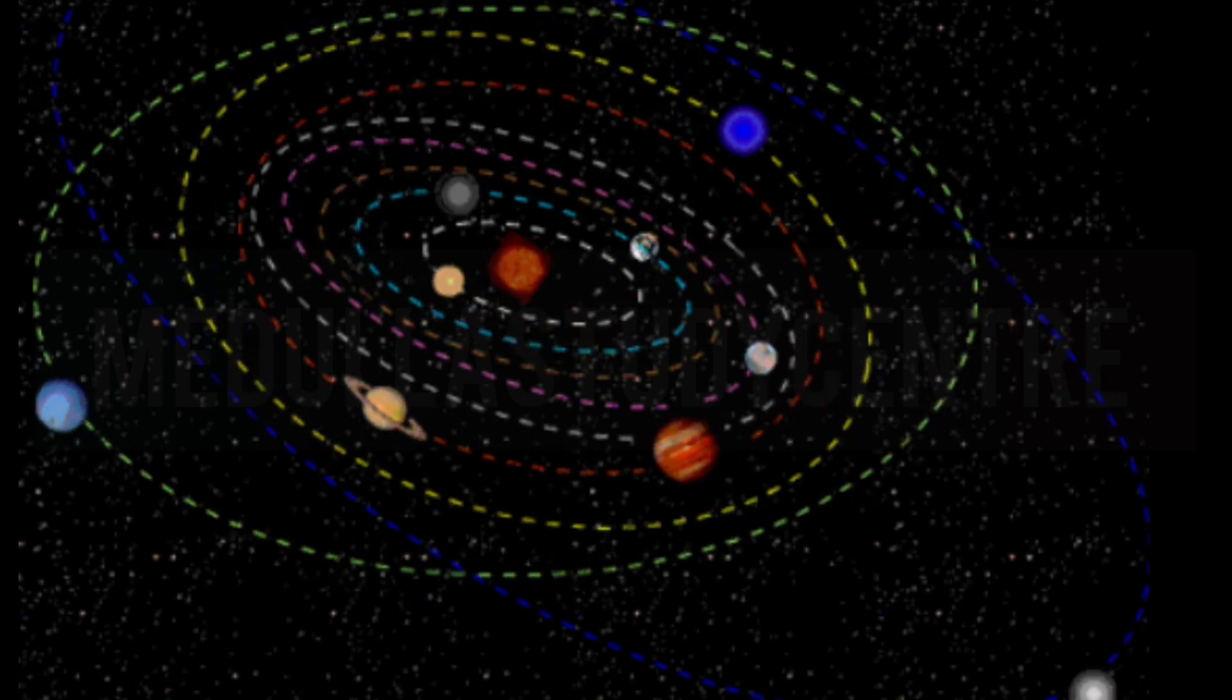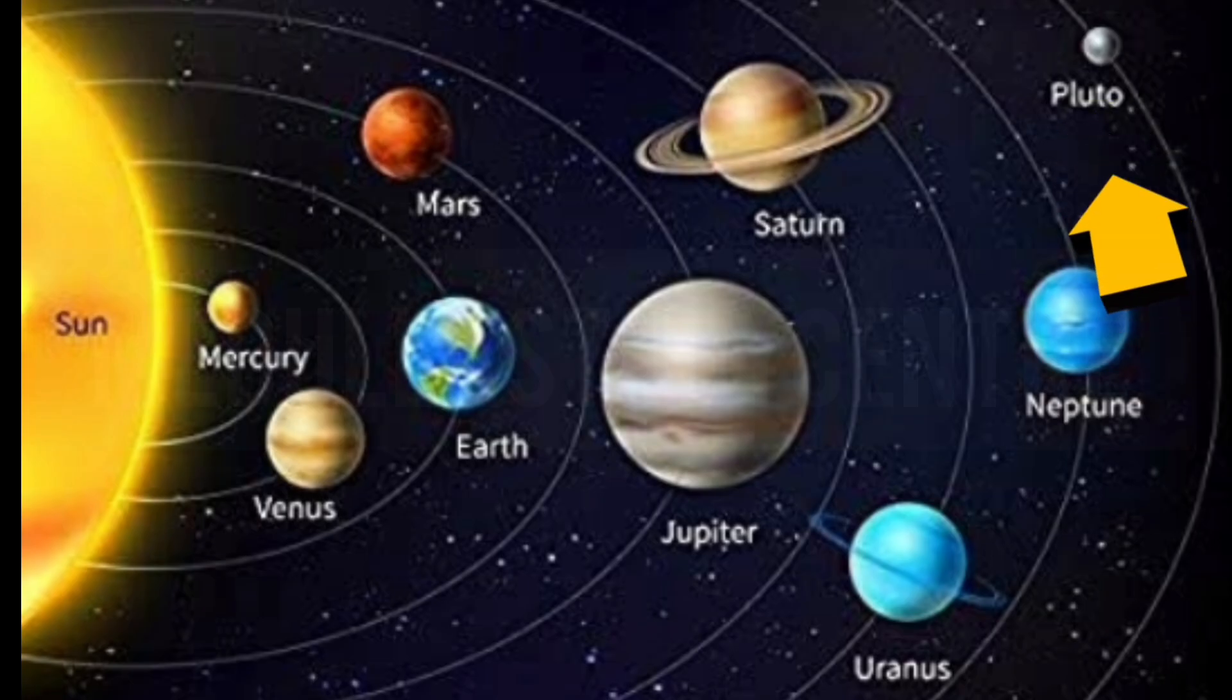Do you know children? Earlier, Pluto was also considered the ninth planet in the solar system. But now, it is known as dwarf planet.